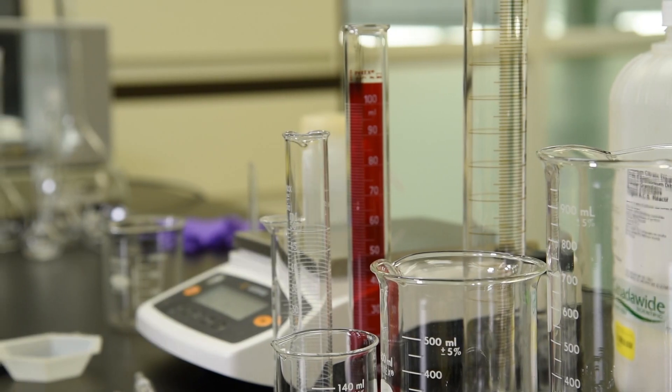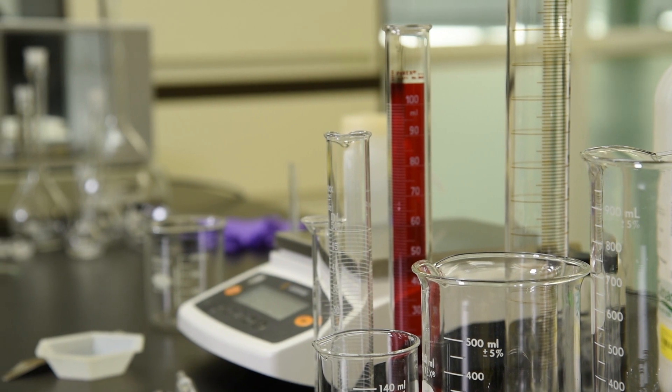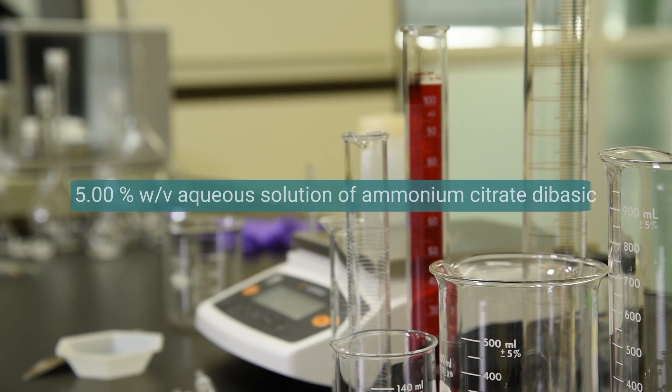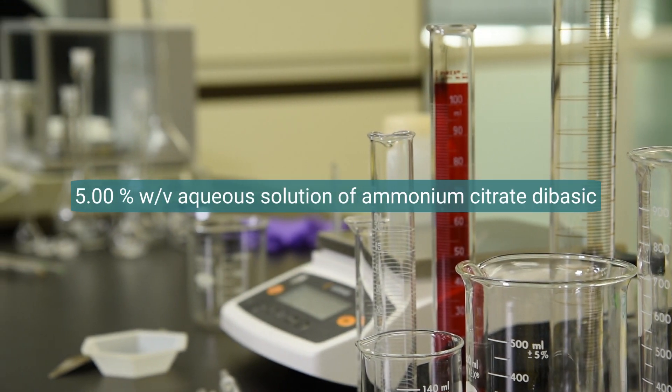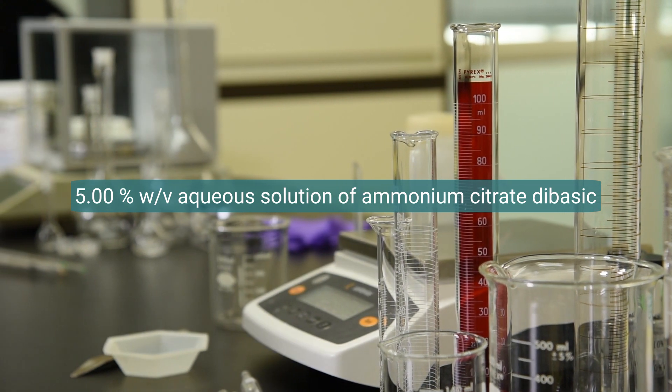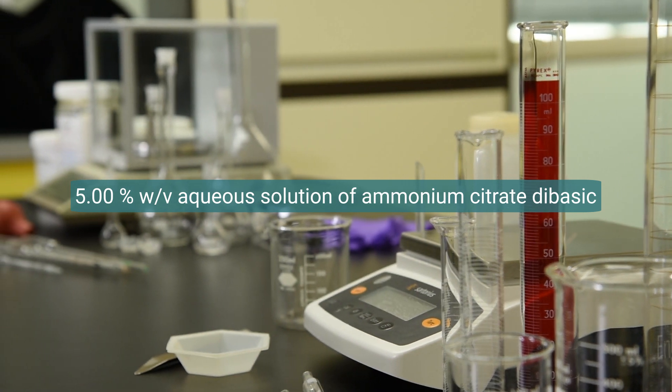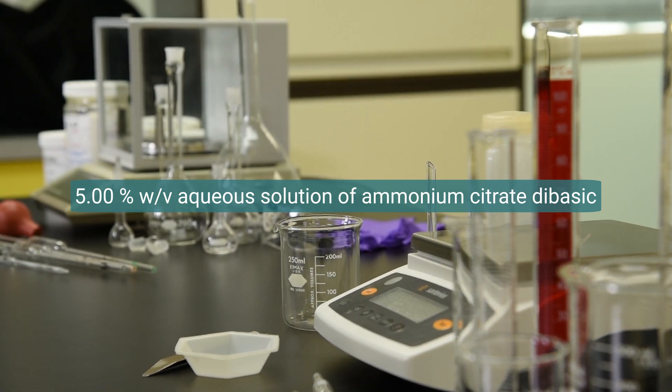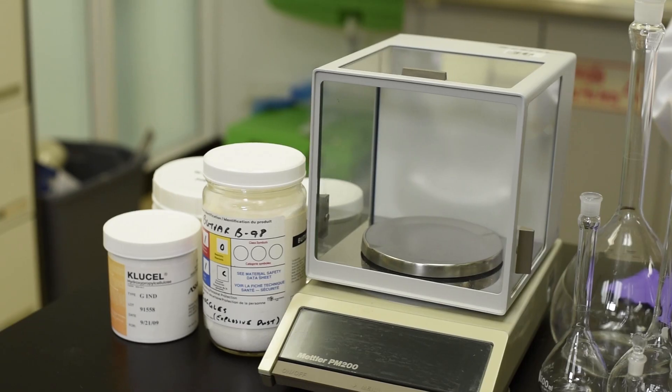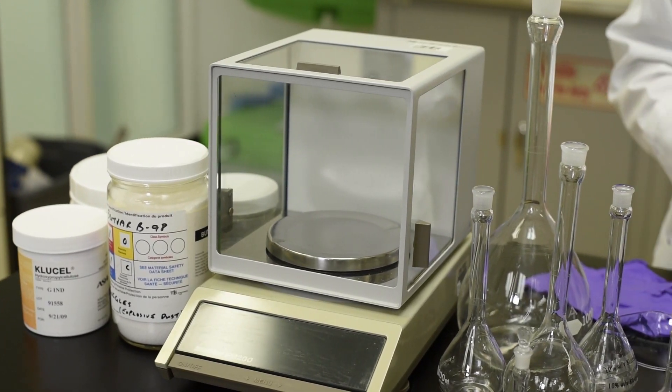Now let's get into the procedure for making solutions. I want to make a 100 milliliter solution of 5.00 percent weight by volume ammonium citrate dibasic in water. I would like my methods to be accurate and reproducible so that other conservators will be able to recreate my concentration. To do this, I will use the analytical balance and a volumetric flask.